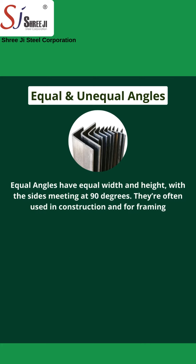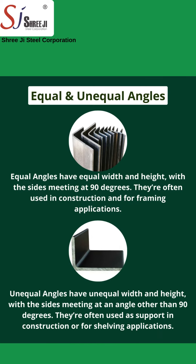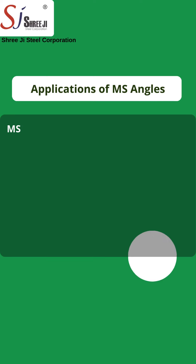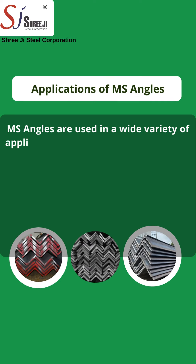Equal angles have equal width and height, with the sides meeting at 90 degrees. They are often used in construction and for framing applications. Unequal angles have unequal width and height, with the sides meeting at an angle other than 90 degrees. They are often used as support in construction or for shelving applications.